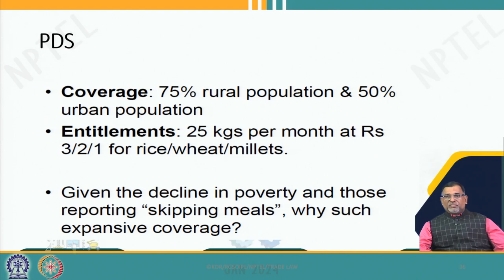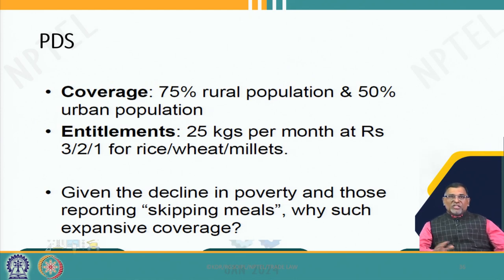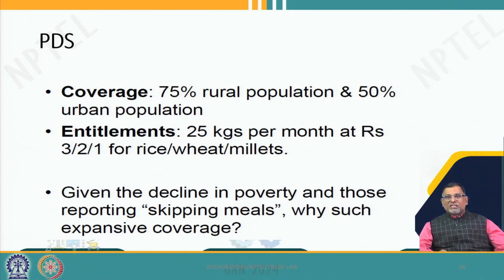The government of India says 75 percent of the rural population and 50 percent of the urban population are covered under the PDS system. 25 kg of food grains are distributed at the price of 3 rupees, 2 rupees and 1 rupee for rice, wheat and millets — the main component of nourishment to people. This contributes immensely to reducing hunger as well as malnutrition in the country.